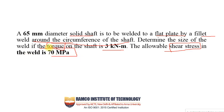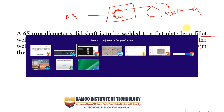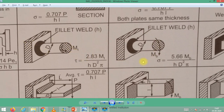A 65 mm diameter solid shaft is to be welded to a flat plate by a fillet weld around the circumference. Determine the size of the weld if the torque of the shaft is 3 kNm. Note the keyword: shear stress. The allowable shear stress in the weld is 70 MPa. Whenever this type of problem is given, redraw the diagram: a flat plate with a rod of 65 mm diameter, connected using a fillet weld.